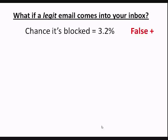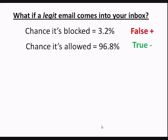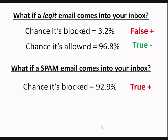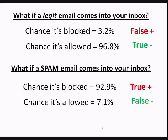Here are the numbers associated with Norton Anti-Spam 2004. The chance that a legitimate email gets blocked as spam is 3.2% — that's a false positive, like testing positive for a disease you don't actually have. So 3.2% false positive, and the complement — 96.8% — is a true negative, meaning legitimate email is allowed through. If spam comes in, the chance it gets blocked is 92.9%, that's a true positive. And the chance it gets allowed through is 7.1% — that's a false negative, like having the disease but the test saying you don't.